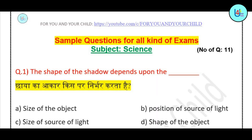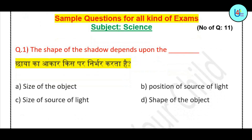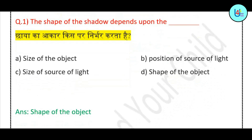Question number 1: The shape of the shadow depends upon — the size of the object, the position of source of light, the size of source of light, or the shape of the object? Correct answer is: shape of the object.